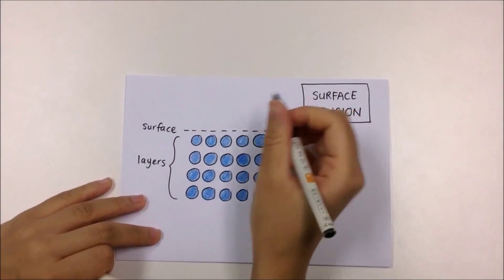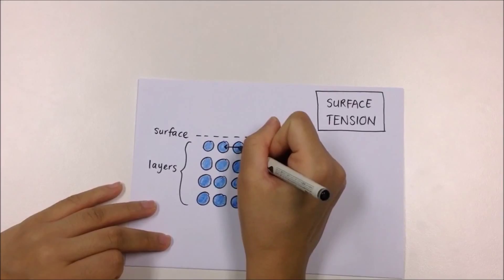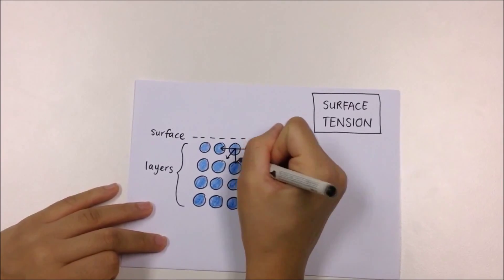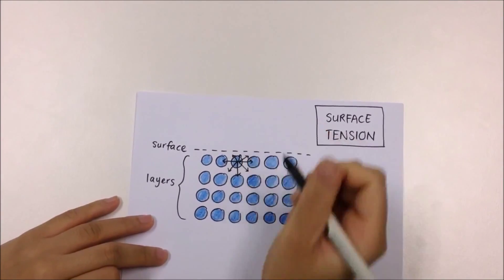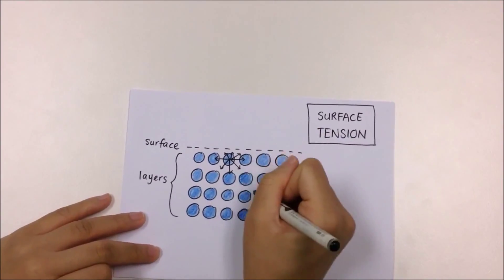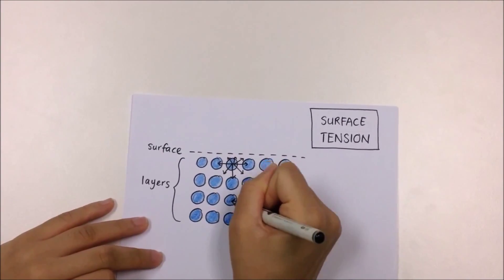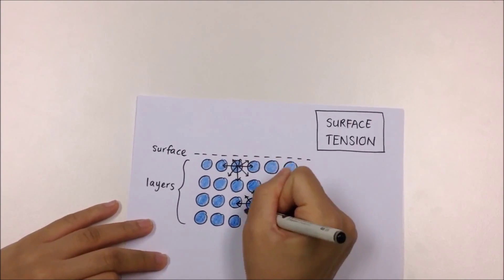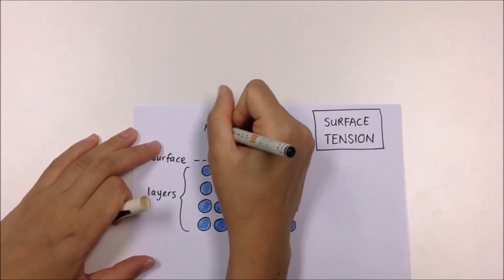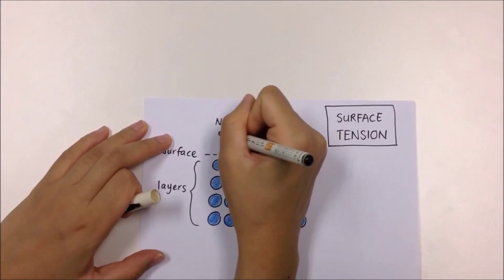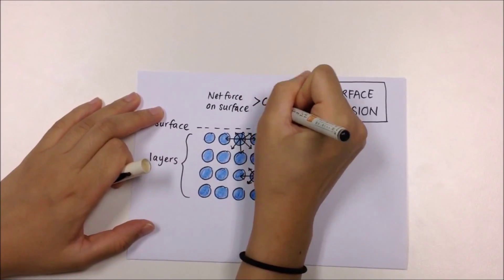This means liquids have a tendency to keep surface tension to a minimum, hence the formation of spherical droplets. This is due to the difference in the net force on the surface of a liquid and within the layers of liquid. The net force on the surface of liquid is greater than zero, whereas the net force within the layers of liquid is equal to zero.